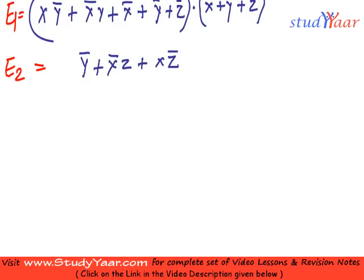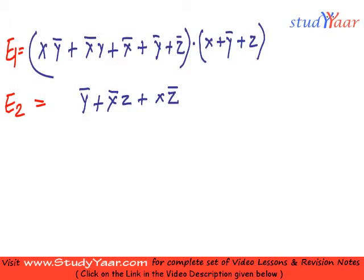So let's transform e1 into e2. I would begin with e1 equal to x y bar plus x bar y plus x bar plus y bar plus z bar.